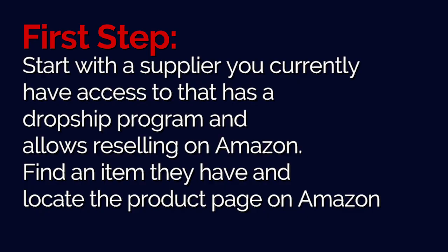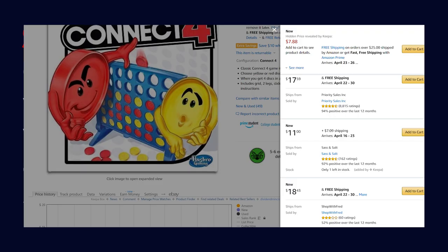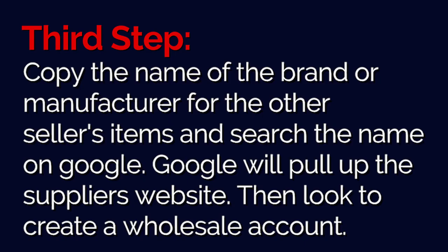To break down reverse sourcing, there are basically three steps. The first step is we take a supplier that we currently have and we find a product of theirs that is currently selling on Amazon. The second step is once you find the product page for that item, you look at all the sellers currently selling that product — these are our competitors — and we pick one to see what other products they're selling. The third step is we take the brand names of those other products and Google them to find the brand's website, to see if we can create an account with that brand.